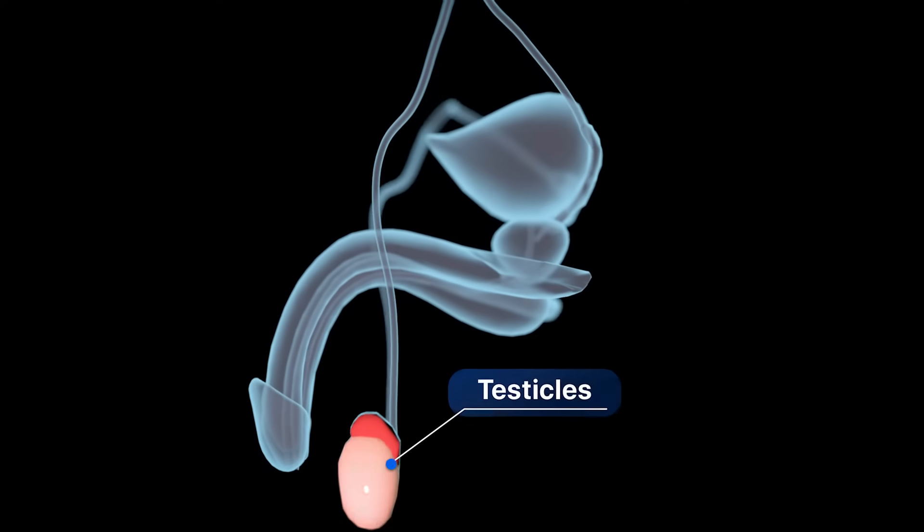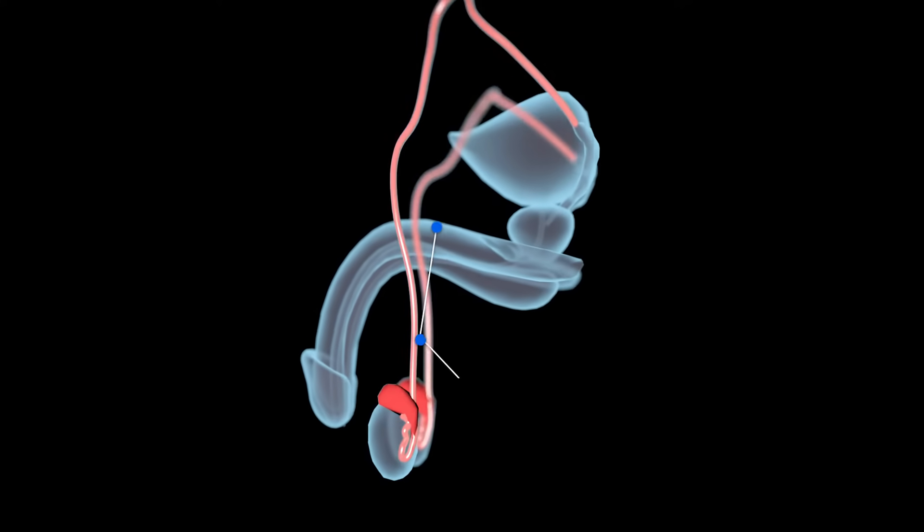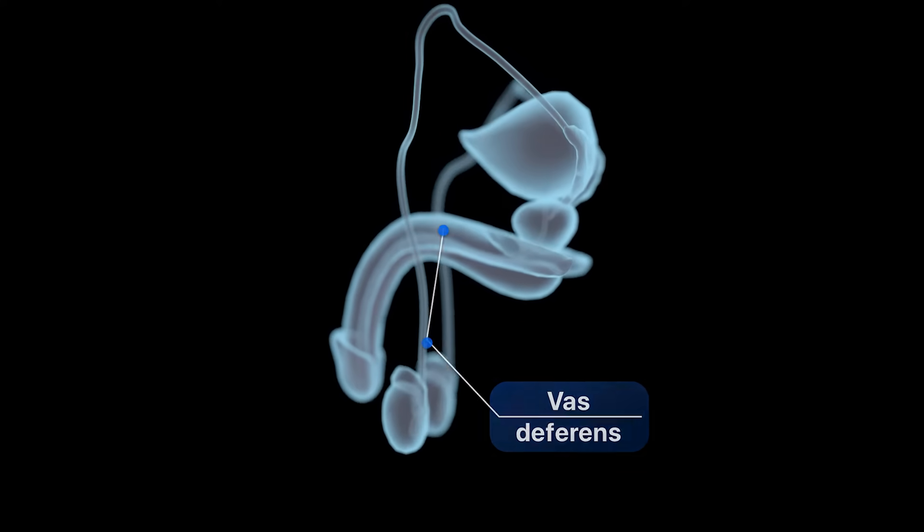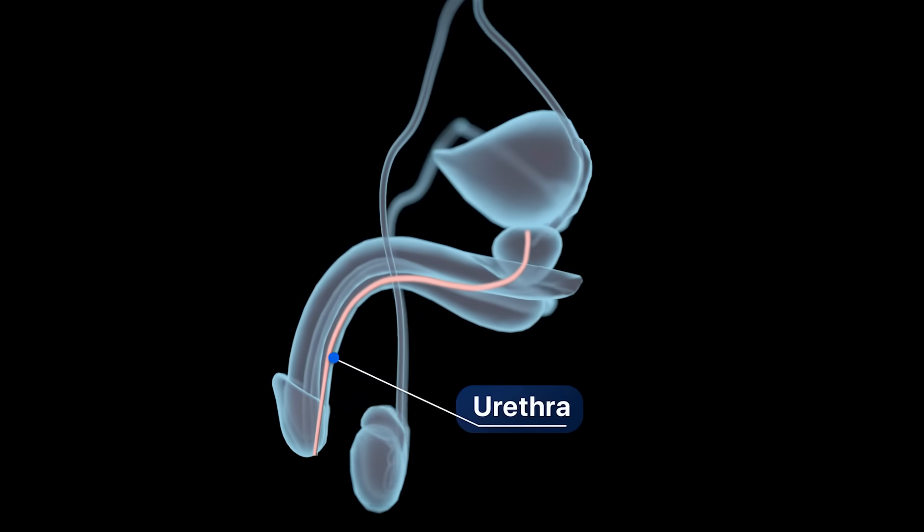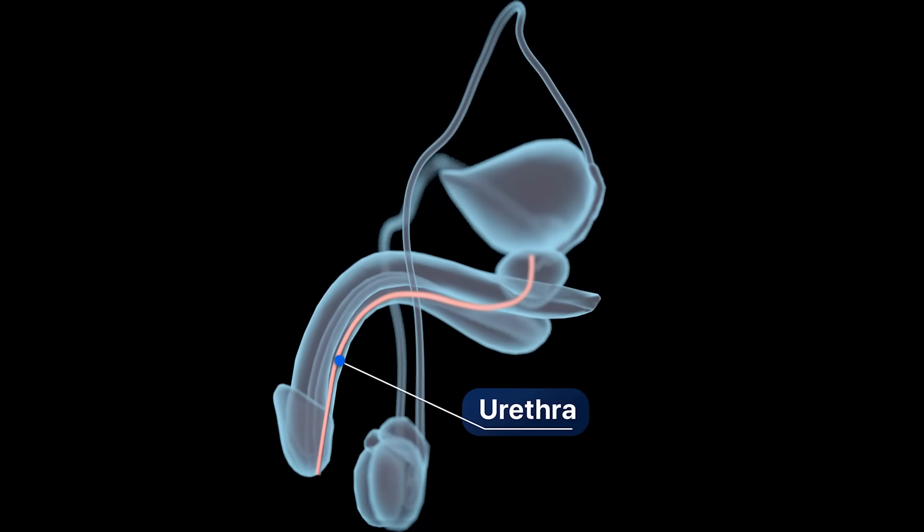Each testicle connects to the vas deferens, which are spaghetti-sized tubes that carry sperm to the urethra, a canal in the penis that carries urine and sperm.